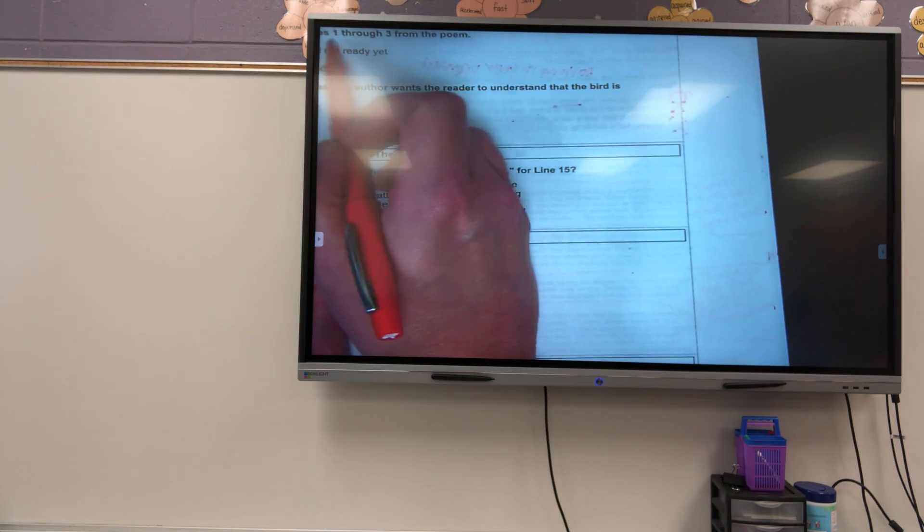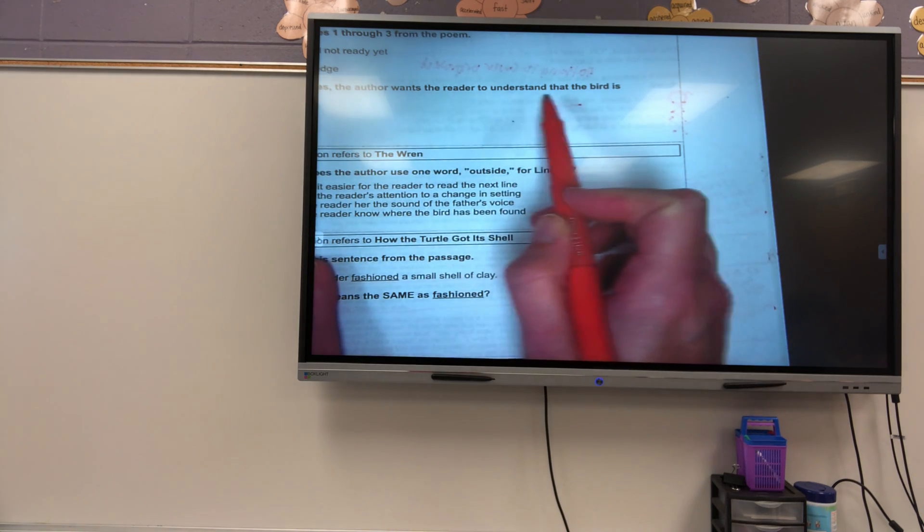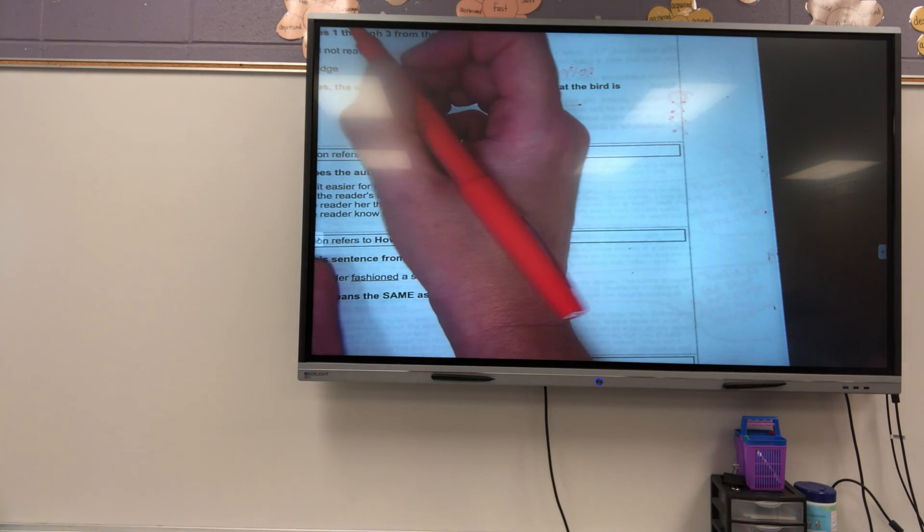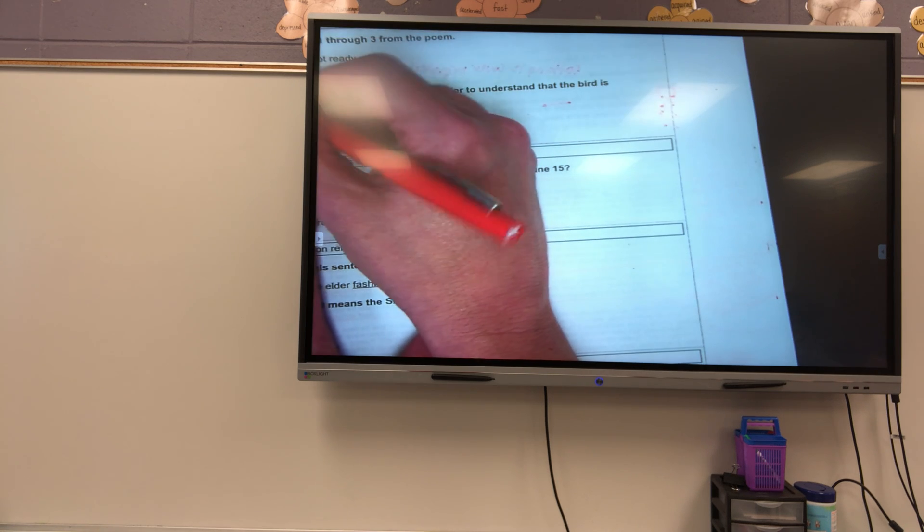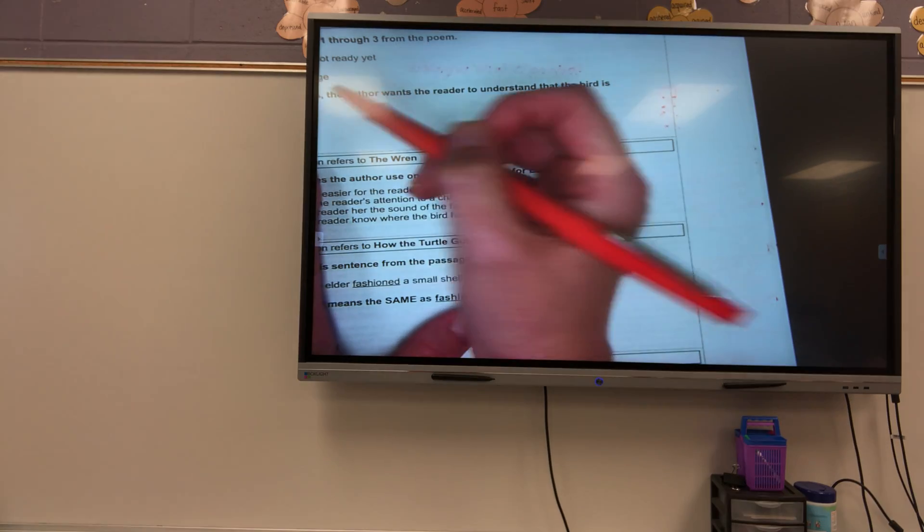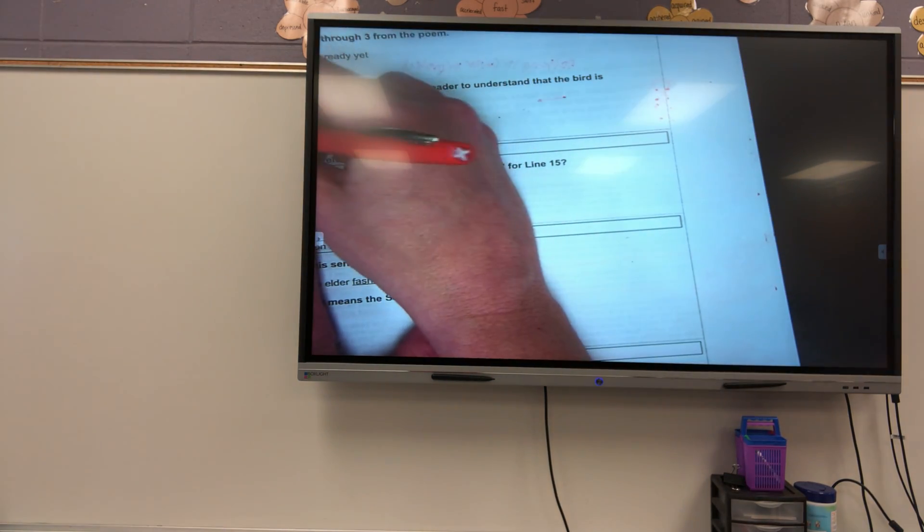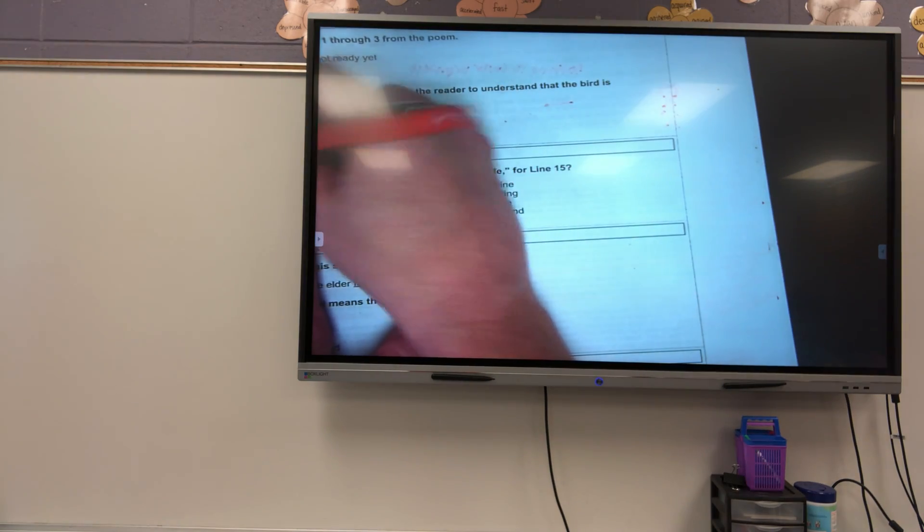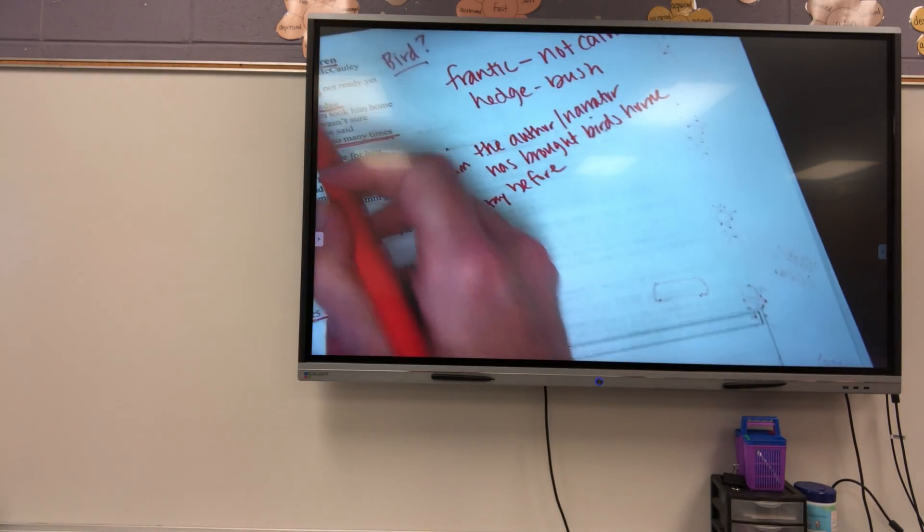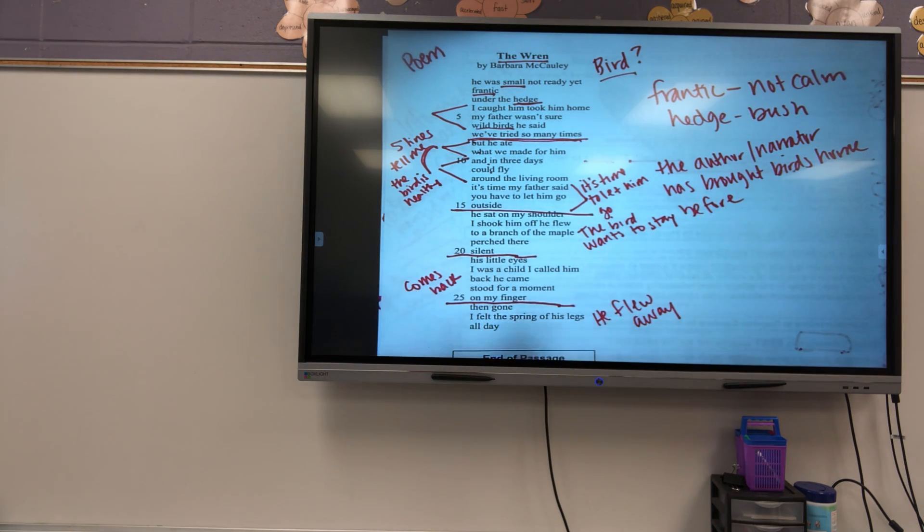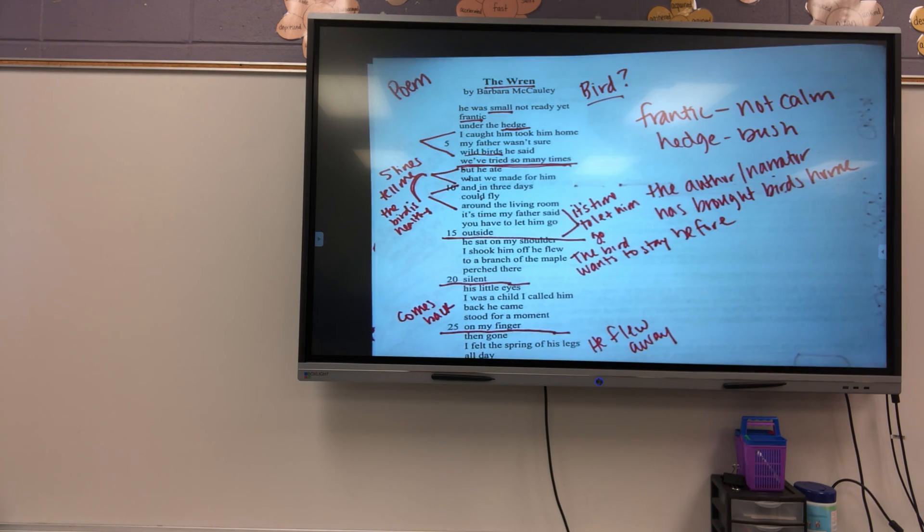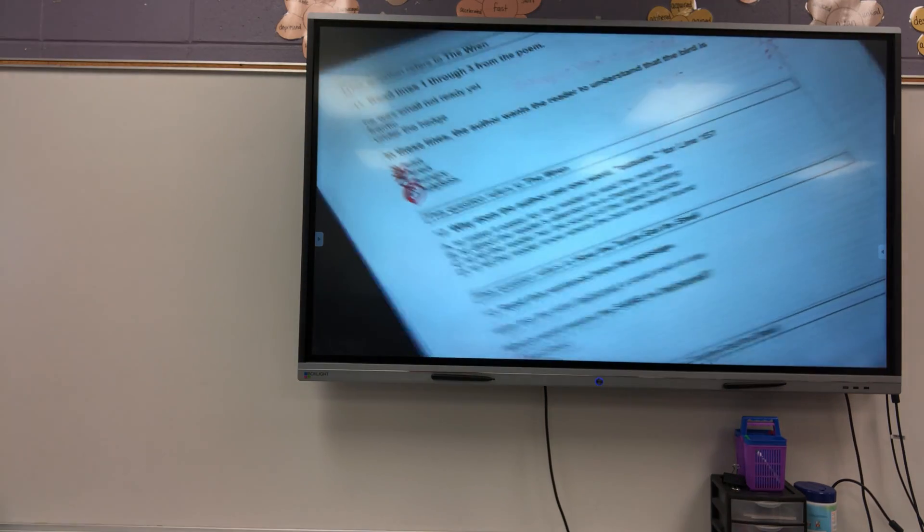So, looking at lines one through three from the poem. He was small, not ready yet, frantic under the hedge. In these lines, the author wants the reader to understand that the bird is sad. No. Was he tired? No. Was he hungry? No. Was he helpless? Yes. Because it says that he was small, he was frantic, which means not calm, and he was under a bush. So, that's telling me that he was helpless. Because if he gets exposed, he would have got eaten.